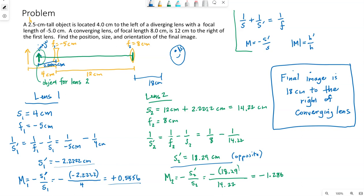Now size and orientation comes from the overall magnification. Overall magnification is the magnification of both lenses multiplied together. So the positive 0.5556